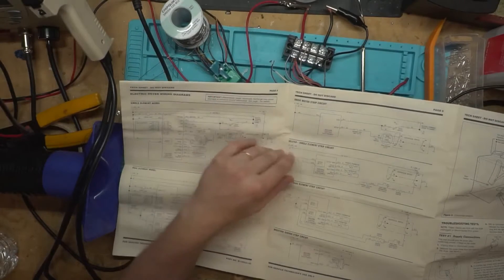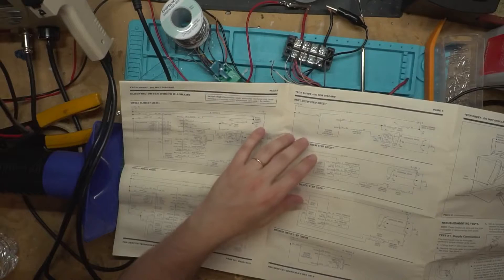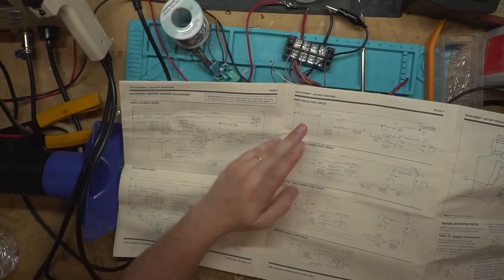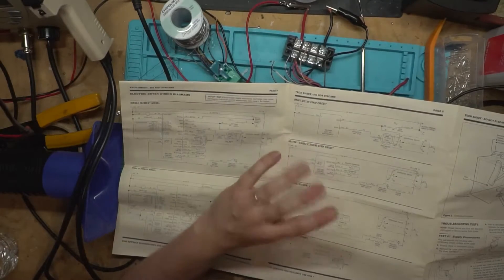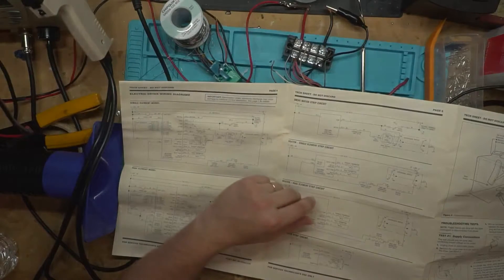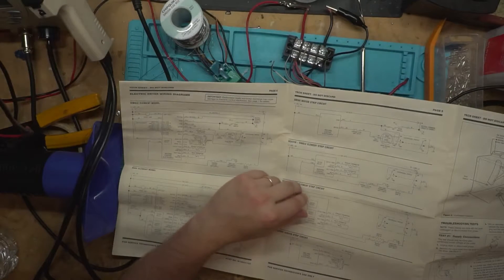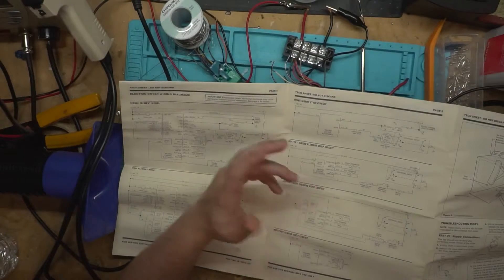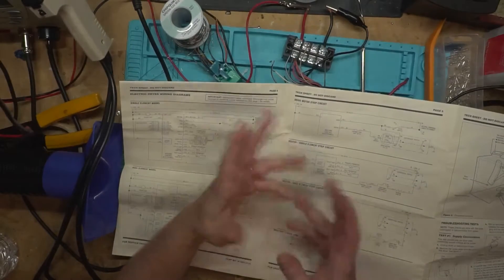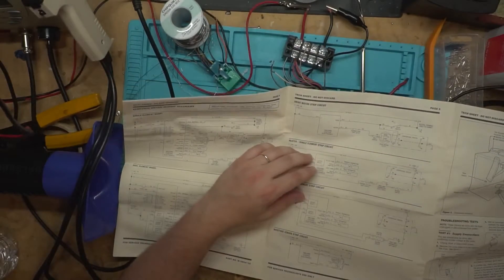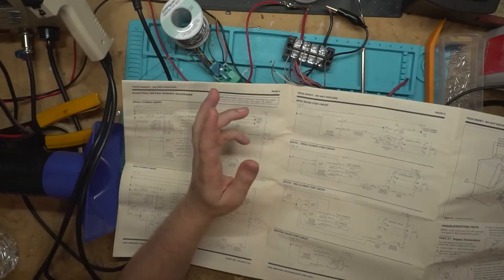So it just turns on and off the motor, which makes sense because the issue I was having is it said F1 and the motor didn't turn on at all. You couldn't hear any rotation of it. And just fixing that cracked solder joint, or blown-out solder joint, repaired it.